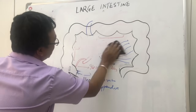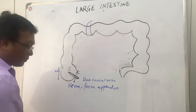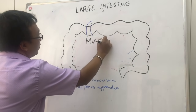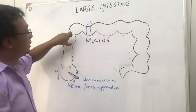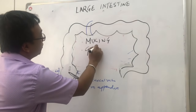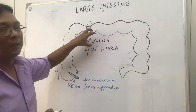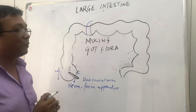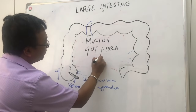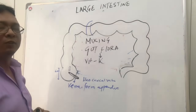The functions of the large intestine include mixing of food material — called the mixing rhythm — and it has a beautiful gut flora which is very important. This gut flora helps in the digestion and absorption of food materials. The gut flora also produces an important vitamin called vitamin K.